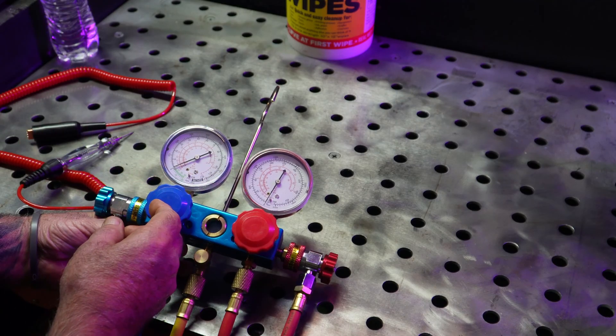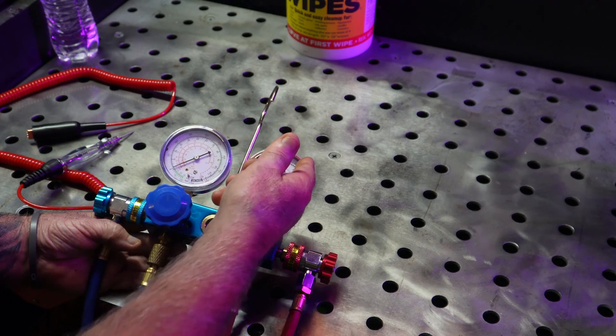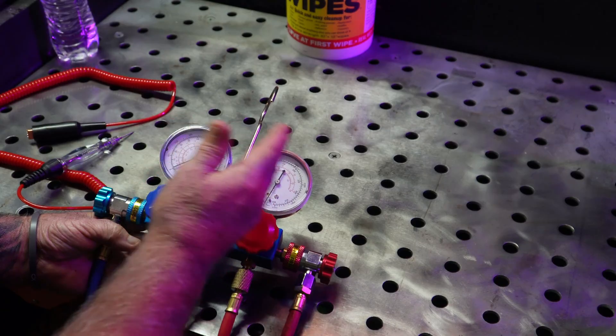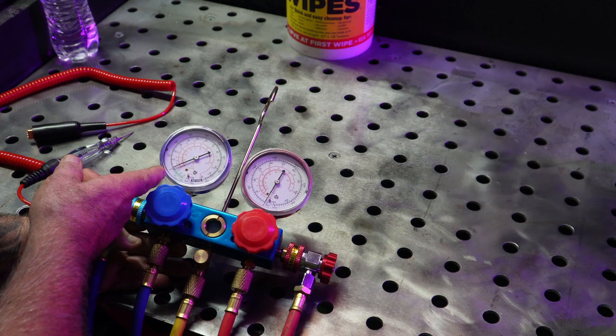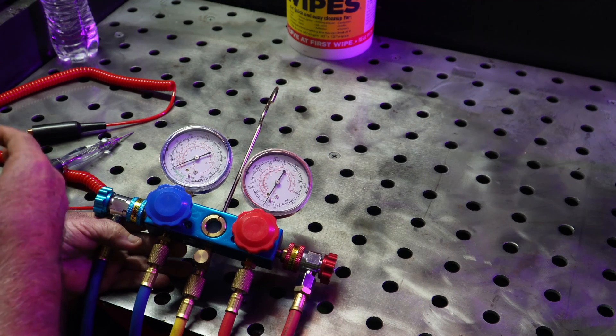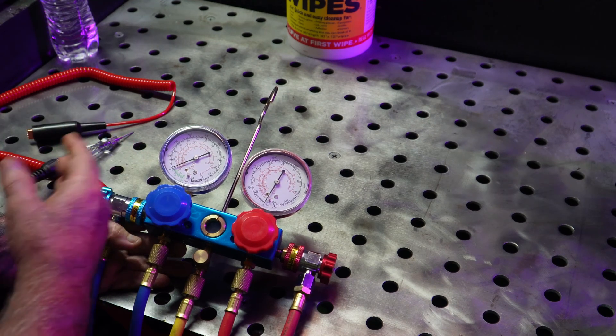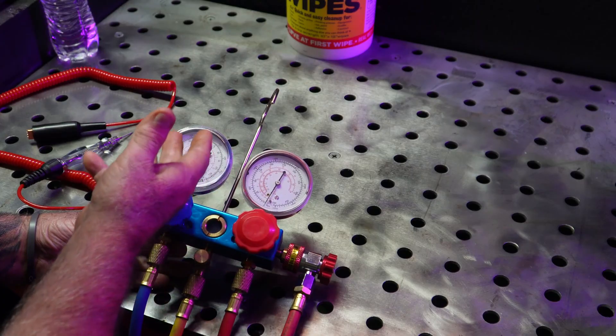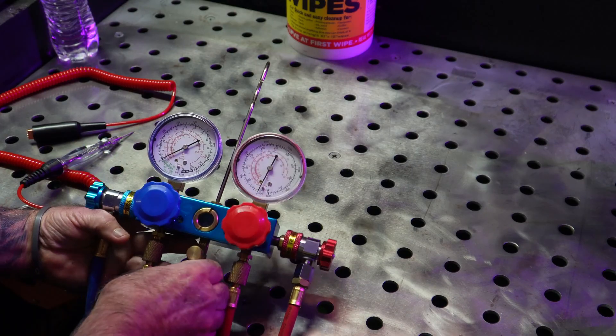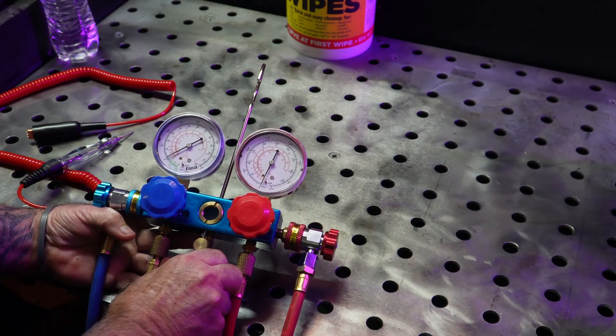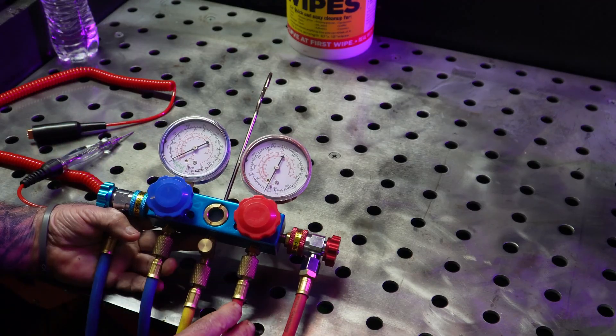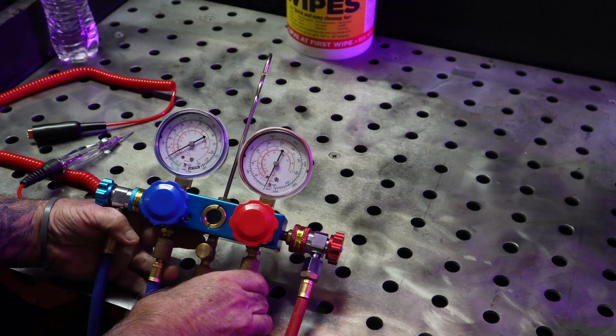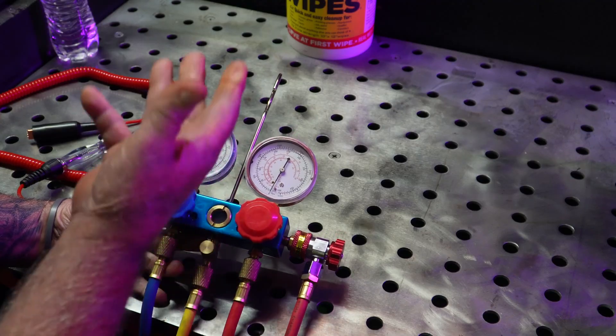If you've got a restriction in your system, you're going to know by these pressures. You're going to be running above average head pressure, sometimes extreme, and your low side won't pull down, sometimes in a vacuum. If you have a dirty evaporator core, it can tell you that. If you have a bad compressor that's not pumping well, it can tell you that.